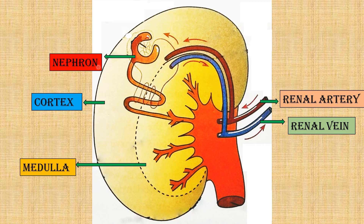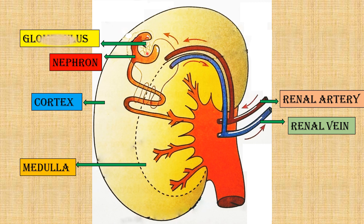The cup-shaped bag is known as the nephron, also known as the Bowman's capsule. The nephron is responsible for filtering the blood and carrying the waste down to the collecting duct. Inside the nephron, we have a bunch of capillaries known as the glomerulus.